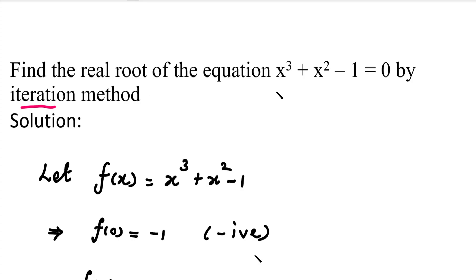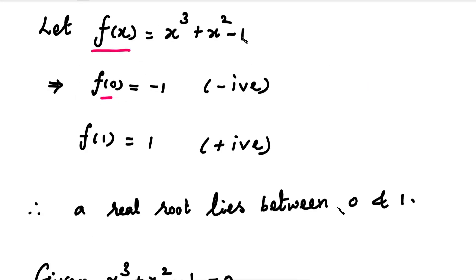First, we will rearrange the equation. We assume that the right side value is 0. We rearrange the equation to check the sign. The answer at x=0 is minus 1, which is negative. The next value at x=1 gives an answer of plus 1, which is positive.